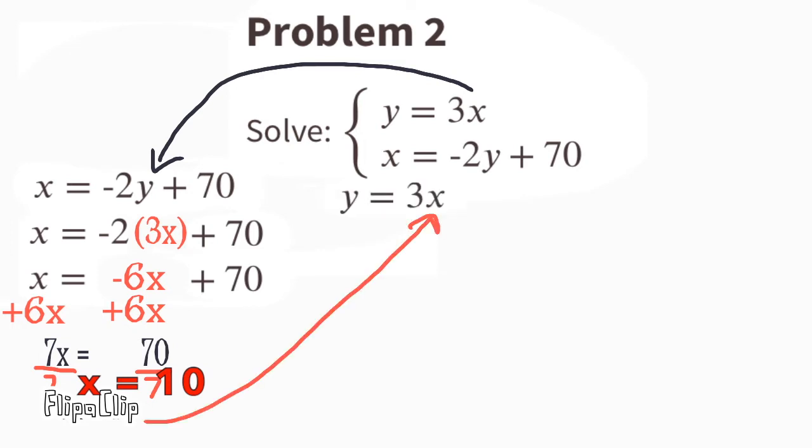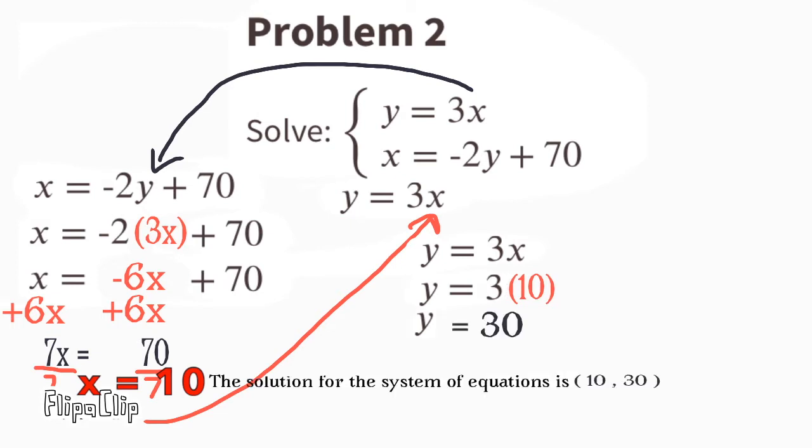Now we can substitute the x with 10. y equals 3 times 10, so y equals 30. x equals 10 and y equals 30. The solution for the system of equations is (10, 30).